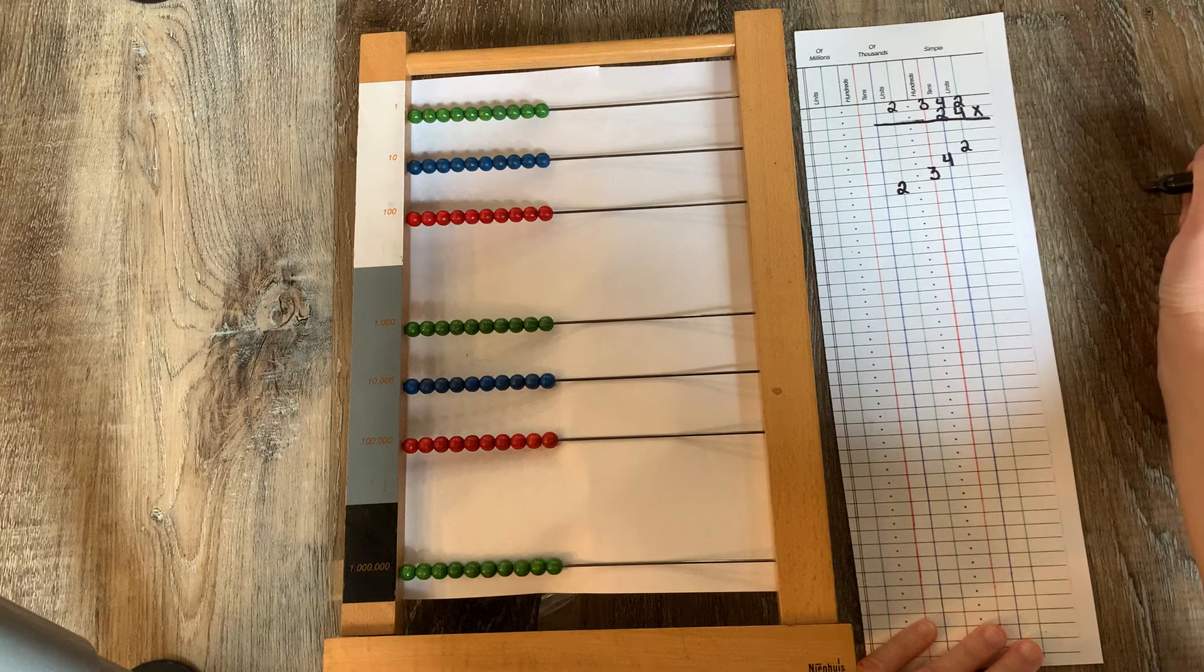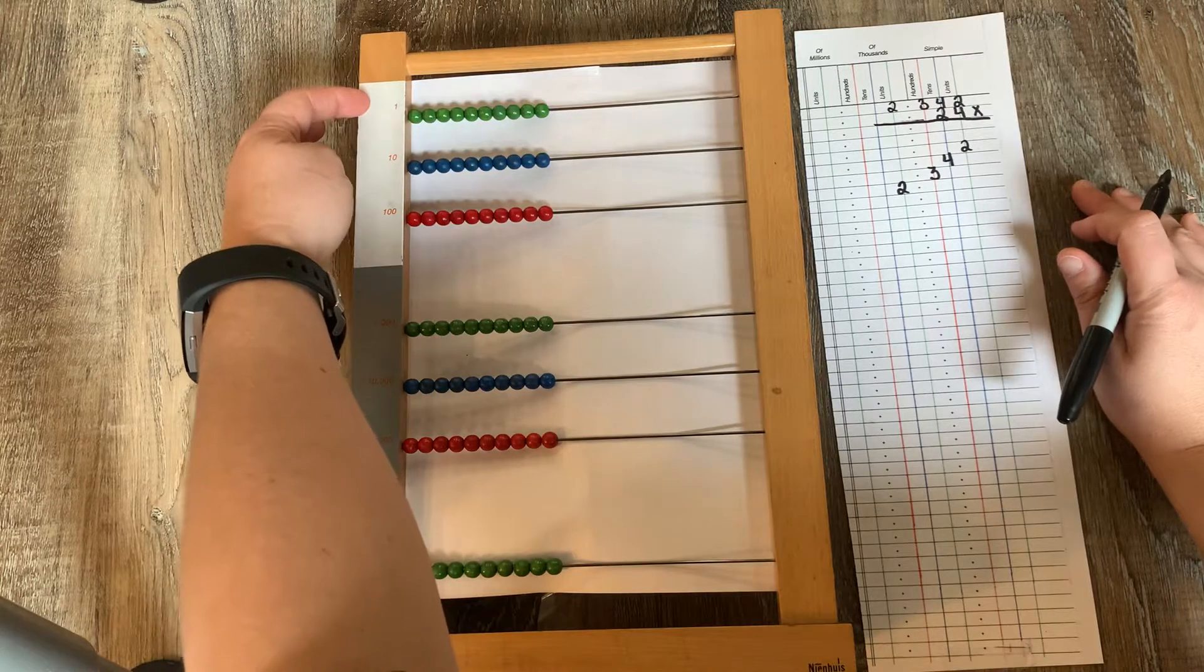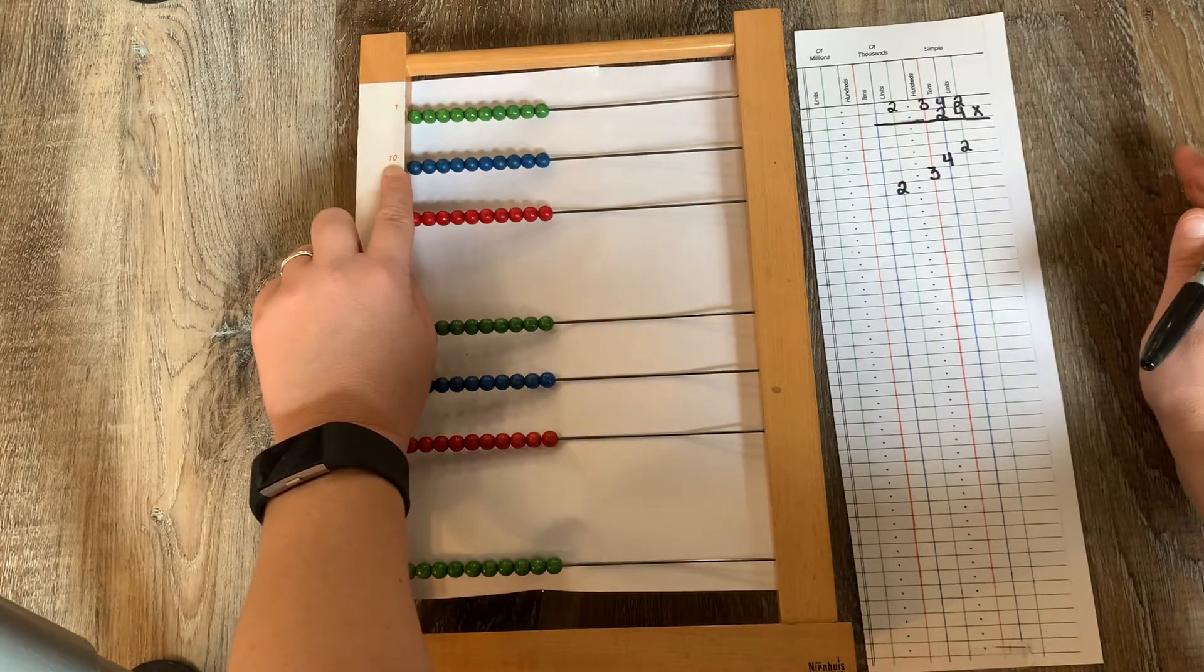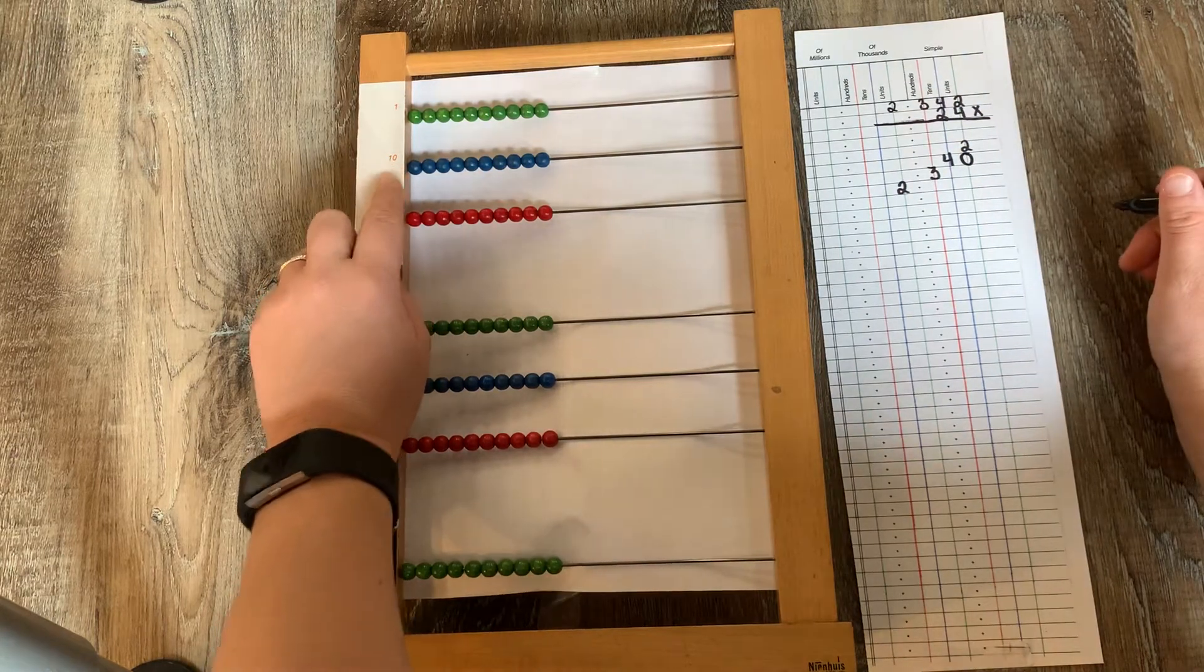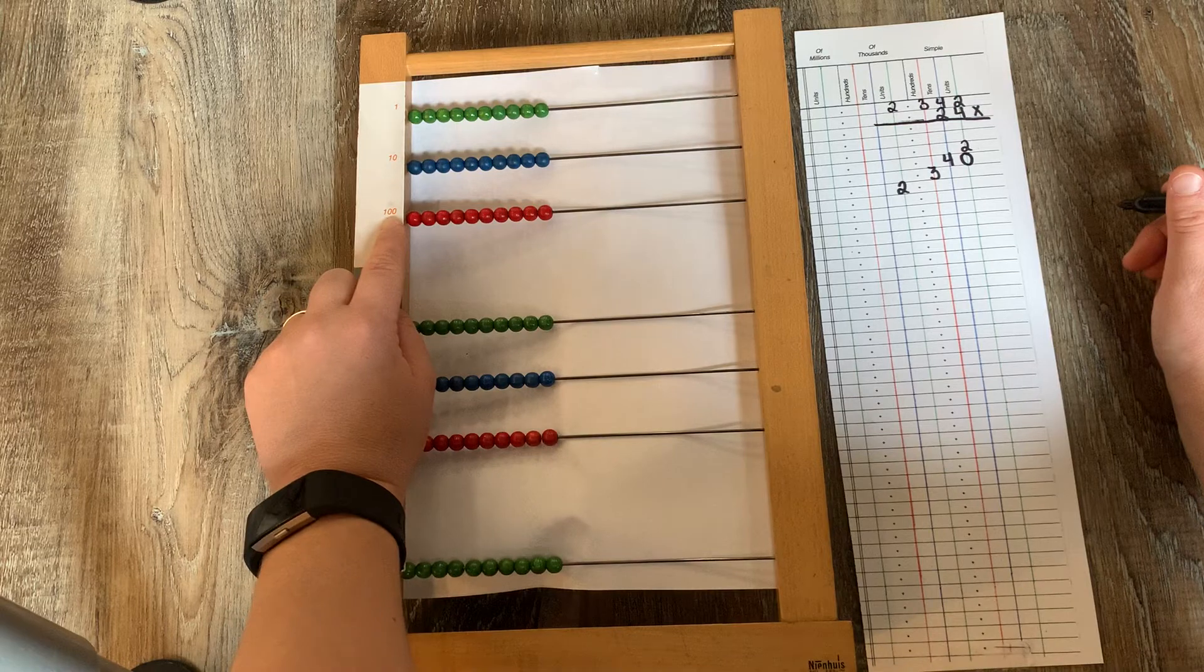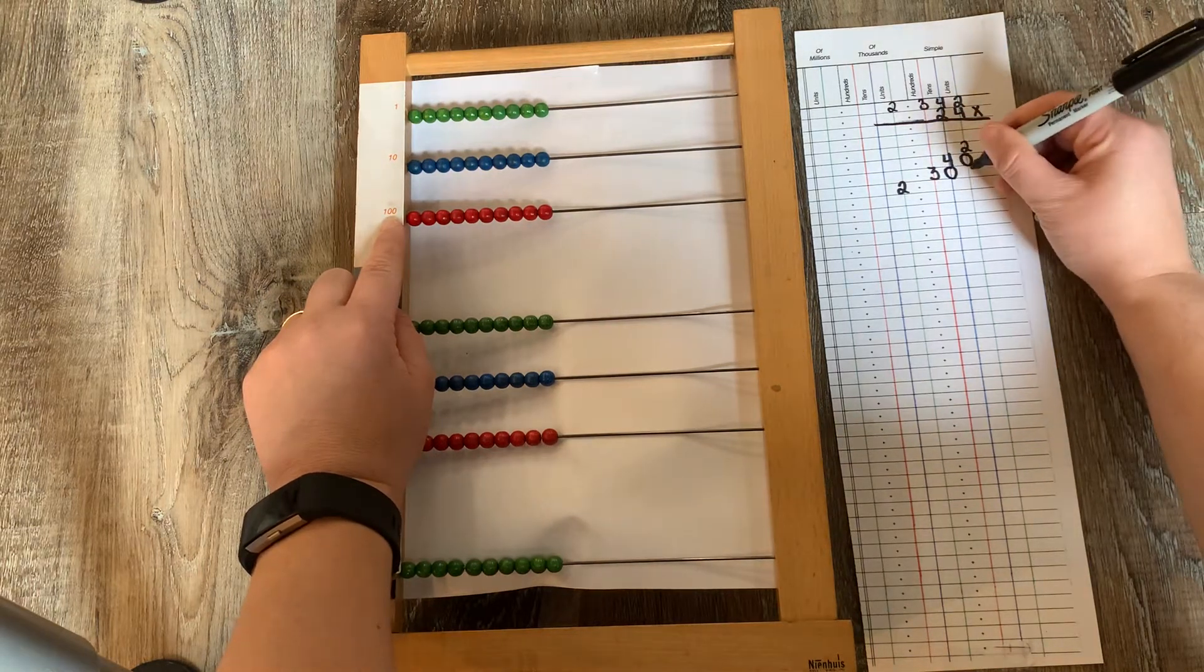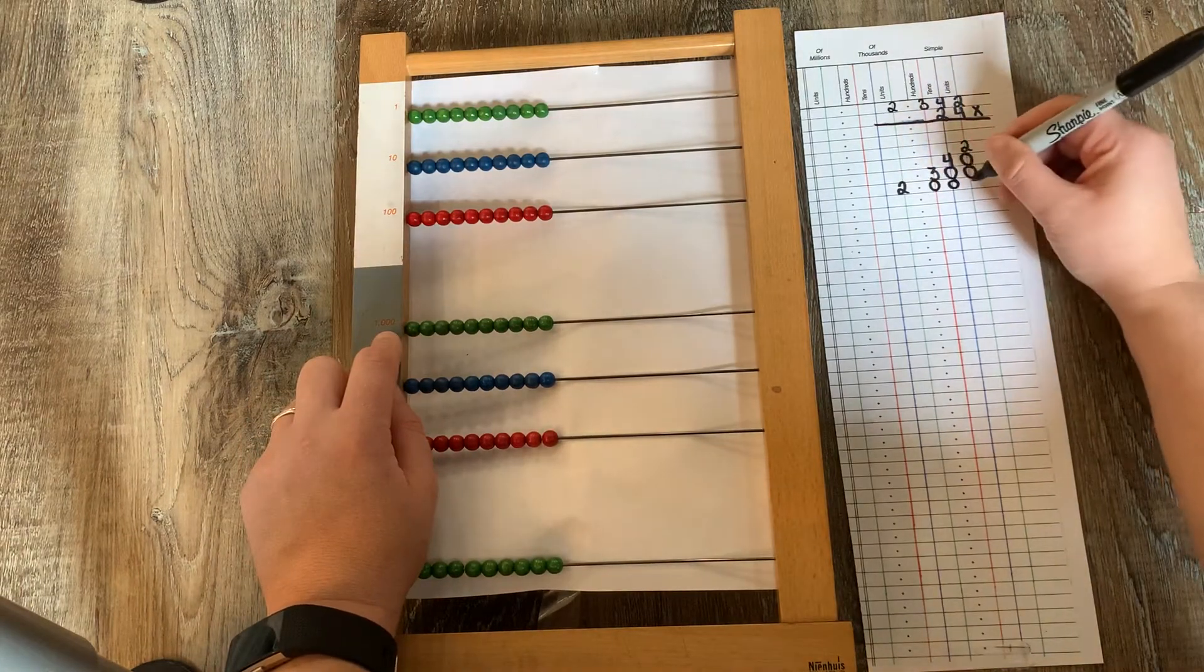And how many zeros are there in my units? Correct, none. How many zeros are in my tens? Yes, one. So I put one zero. How many zeros are in my hundreds? Yes, two. And how many zeros are in my thousands? Yes, three.